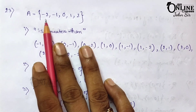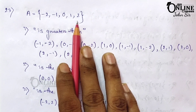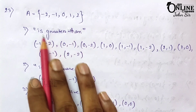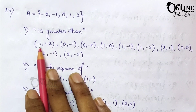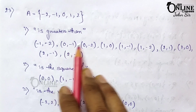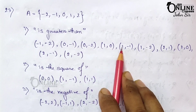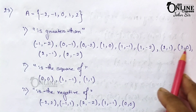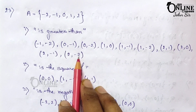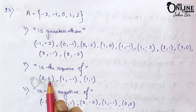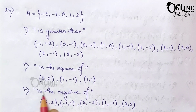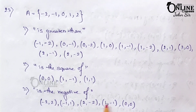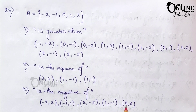Next, sum number 23. Let A = {−2,−1,0,1,2}. List the ordered pairs satisfying each relation on A. First, 'is greater than': (−1,−2), (0,−1), (0,−2), (1,0), (1,−1), (1,−2), (2,1), (2,0), (2,−1), (2,−2). Second, 'is square of': (0,0), (1,−1), (1,1). Third, 'is the negative of': (−2,2), (−1,1), (2,−2), (1,−1), (0,0).